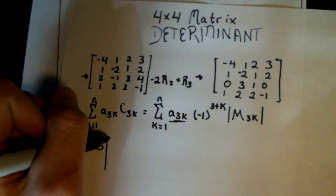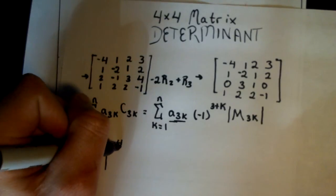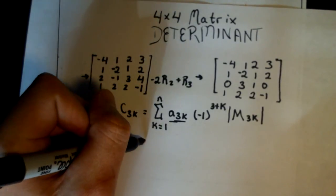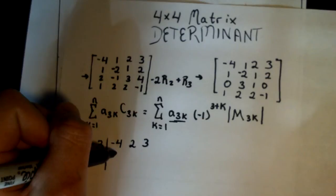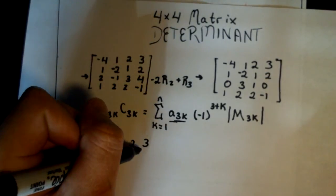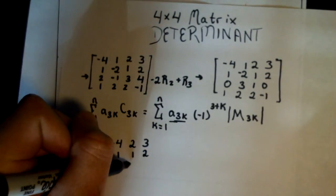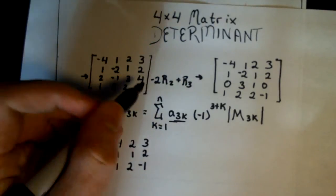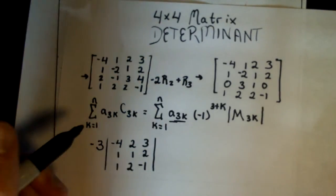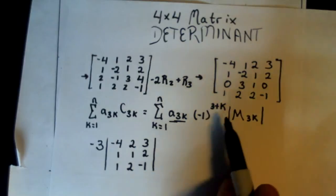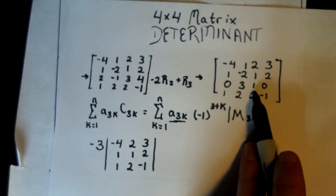So we have negative 4, 2, 3, 1, 1, 2, 1, 2, negative 1. Okay, so now we are going to do it for the second, or the third column, third row.